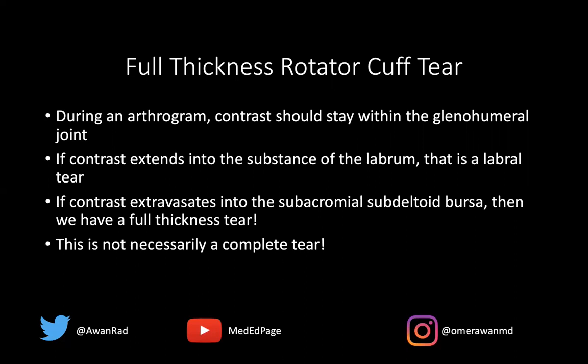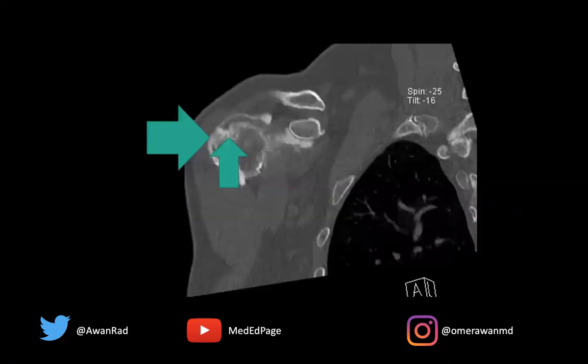This is not a complete tear because the rotator cuff is a three-dimensional structure. It has a thickness, which is the craniocaudate dimension seen in the coronal plane, and it has a width — an AP dimension seen in the sagittal plane. We know nothing about the width based on the image shown, so the best answer here is a full thickness rotator cuff tear.